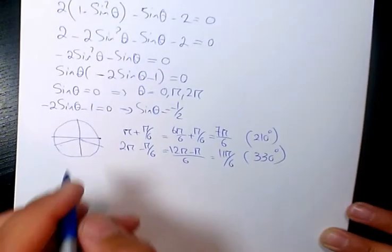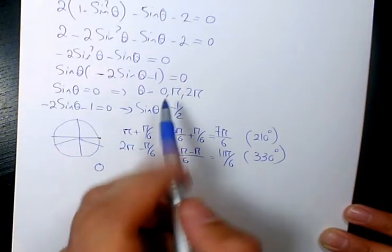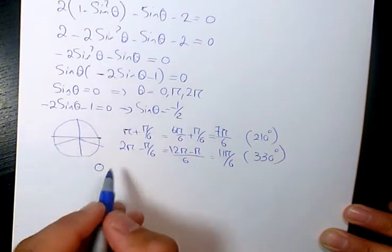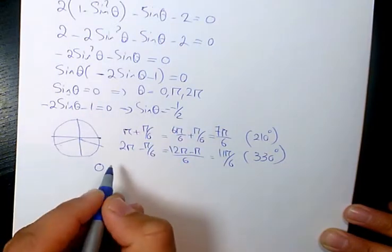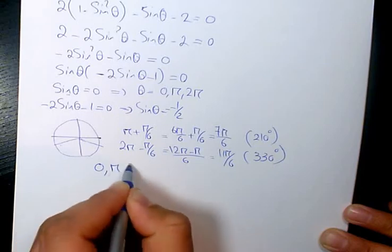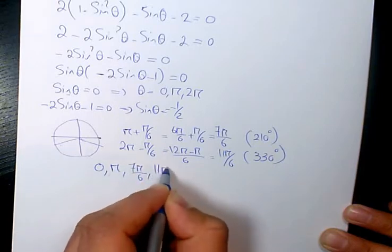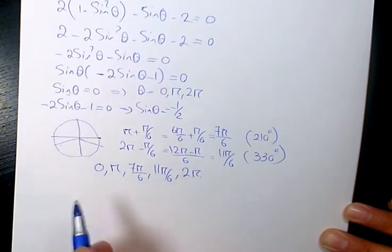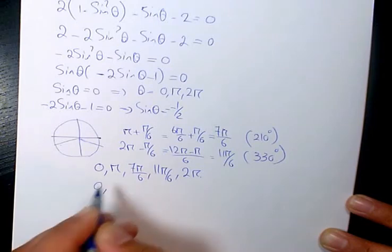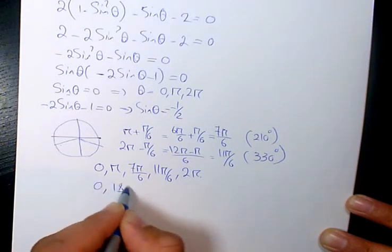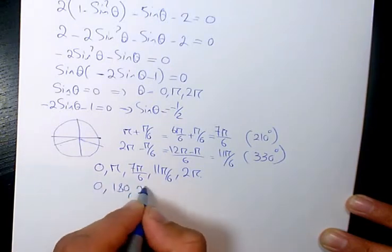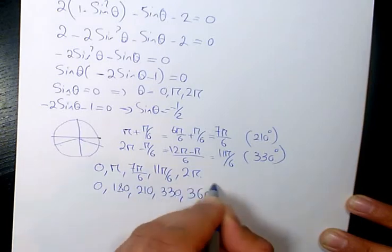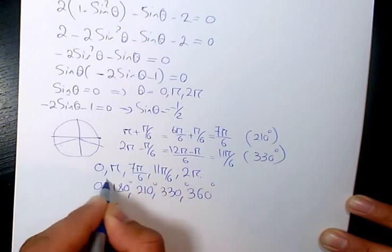So the answer is going to be—here we have three answers for the first one and two answers for the second one. So if I rearrange it, it's going to be 0, π, 7π/6, 11π/6, and 2π. These are in terms of radians. In terms of degrees it's going to be 0, 180, 210, 330, and 360 degrees. So these are the five answers to this question.